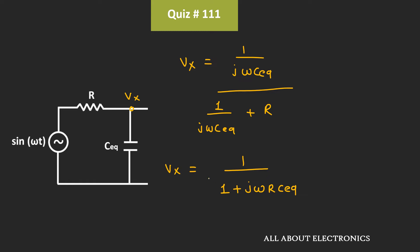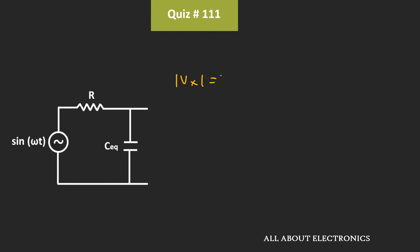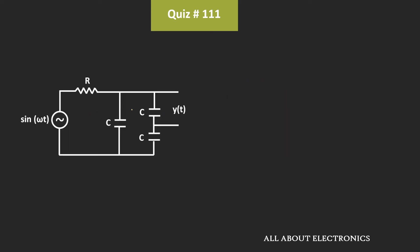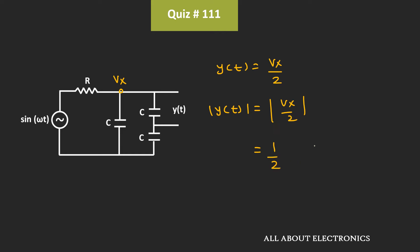If we just consider the magnitude of Vx, then |Vx| will be equal to 1 divided by the square root of 1 plus R²·C_eq²·ω². This will be the magnitude of the voltage at this node. From the original circuit, if Vx is the voltage at this node, then Y(t) will be Vx divided by 2. That means the magnitude of Y(t) will be equal to Vx divided by 2, which gives 1 divided by 2·√(1 + R²ω²C_eq²).